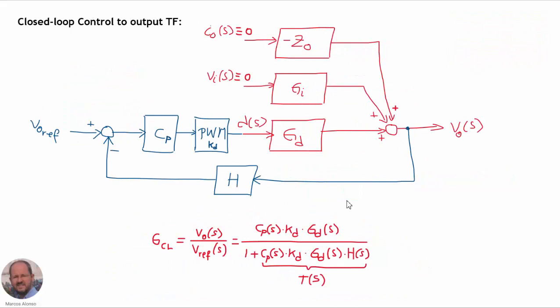Here we can see the closed-loop block diagram of our DC-DC converter. In blue we show the different blocks corresponding to closed-loop operation. We measure the output voltage using the sensor and filter H, compare this signal with the reference voltage, send the error into the compensator, then into the PWM generator, and finally into the control-to-output transfer function. Analyzing this loop, we can get that the control-to-output transfer function in closed-loop — the output voltage over the reference voltage — has the expression shown here.